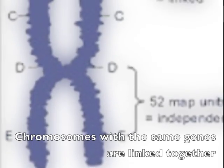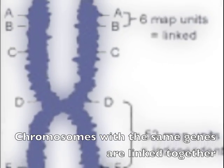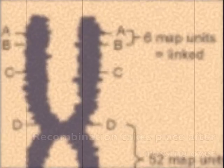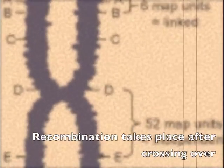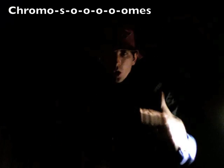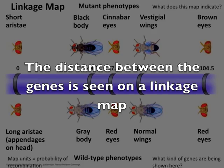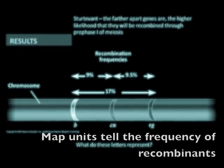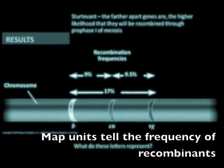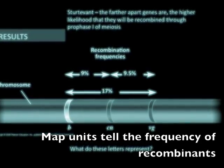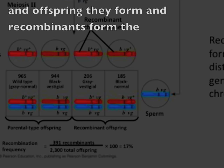Chromosomes with the same genes are linked together. Recombination takes place after crossing over. The parentals, offspring they form, and recombinants form the chromosomes. The distance between the genes is seen on the linkage map; map units tell frequency of recombinants. The parentals, offspring they form, and recombinants form the chromosomes.